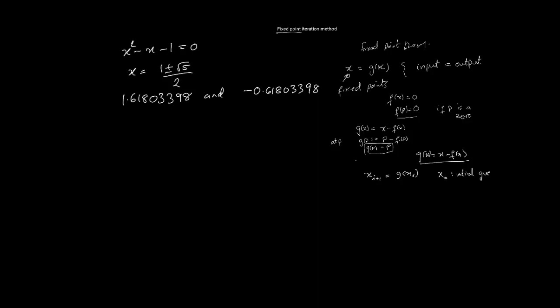Let's see how we can set up a fixed point iteration to solve this problem. There are many options that we have. For instance, we can say x squared equals x plus 1, which means x equals (x plus 1) over x, which is 1 plus 1 over x. We can set up the iterative process to be x_{i+1} equals 1 plus 1 over x_i.